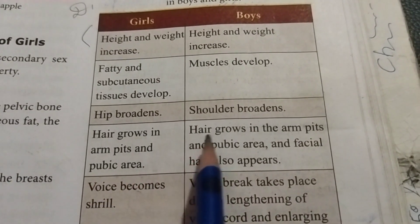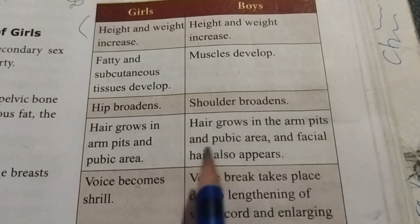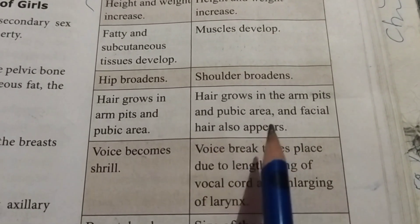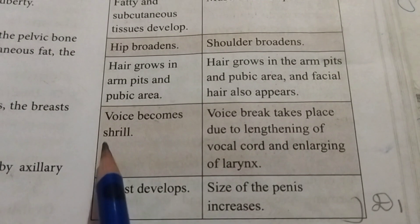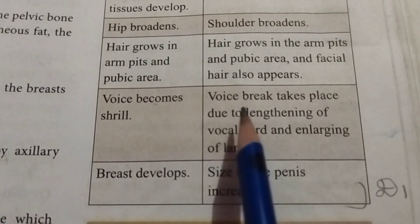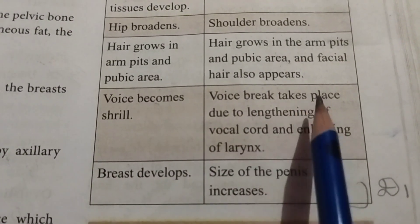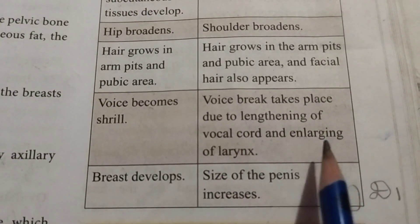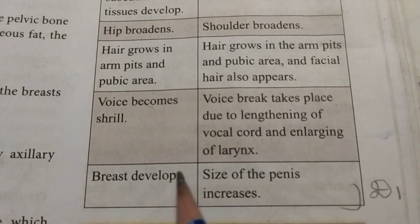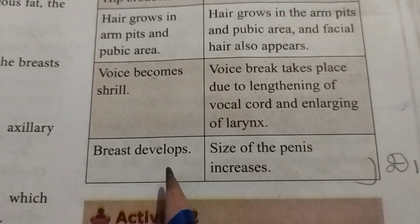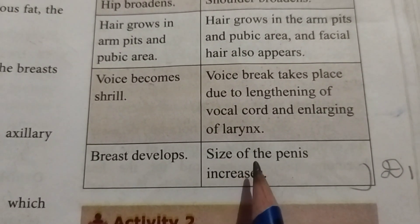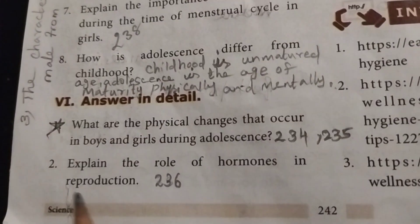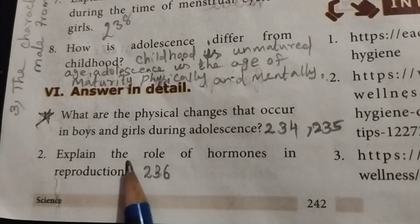Girls develop hair in armpits and pubic area; boys develop hair in armpits, pubic area, and facial hair also appears. Girls' voice becomes shrill; boys experience voice break due to lengthening of the vocal cord and enlarging of the larynx. Girls' breasts develop; boys' size of the penis increases. Up to this, first detailed answer.